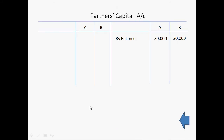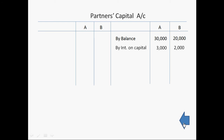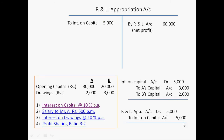The first entry will be posted on the credit side of partners' capital account. This is the partners' capital account and on the credit side: by interest on capital — 3,000 and 2,000. Now we can easily see that the balance of A's capital account increased to 33,000 and balance of B's capital account increased to 22,000. So earlier their balances were 30,000 and 20,000, but after posting this entry the balances are updated. So in this manner the first point is over.